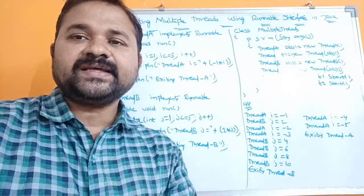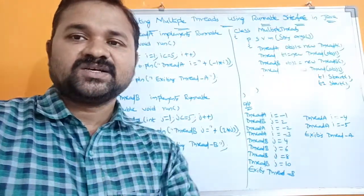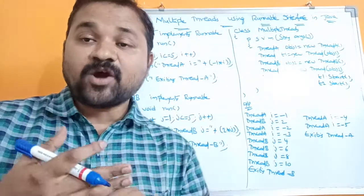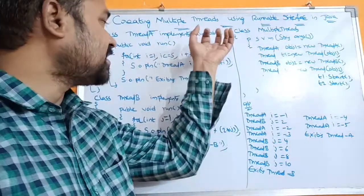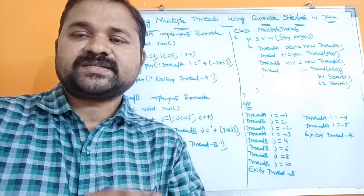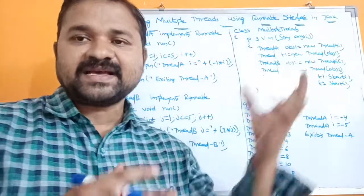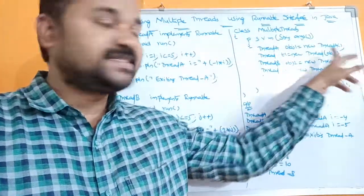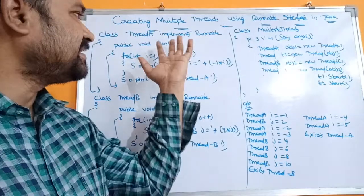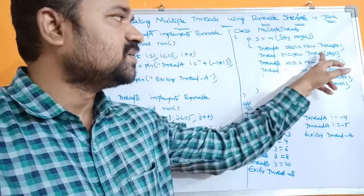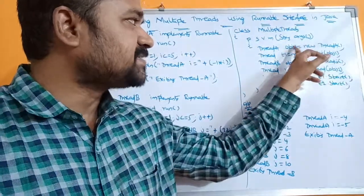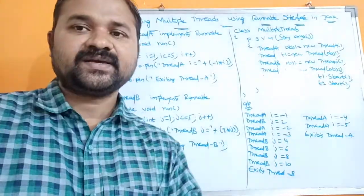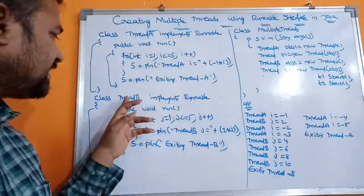The Runnable interface doesn't contain the definition for the run method — actually the run method is present in the Thread class. That's why we have to create an object for the Thread class. Thread is a class that contains the run method, so: Thread t1 = new Thread(obj1). We pass the ThreadA object obj1 as the parameter. Likewise, we create an object for Thread B: ThreadB obj2 = new ThreadB().